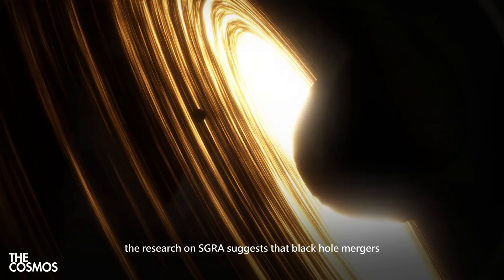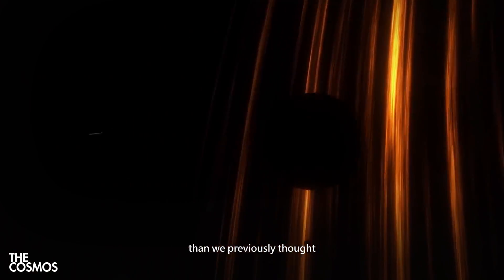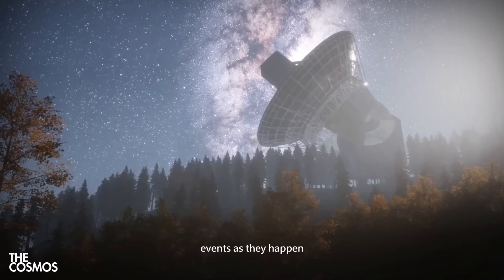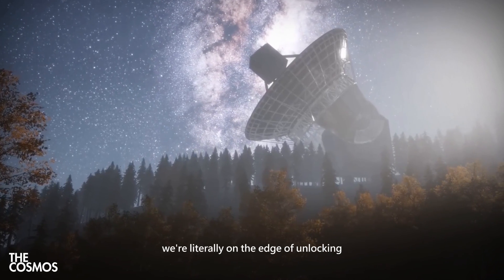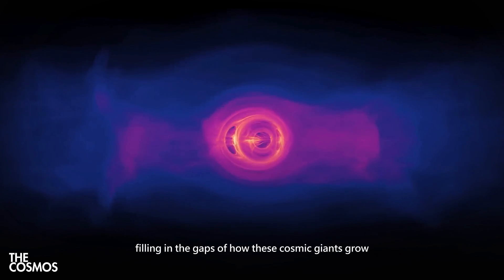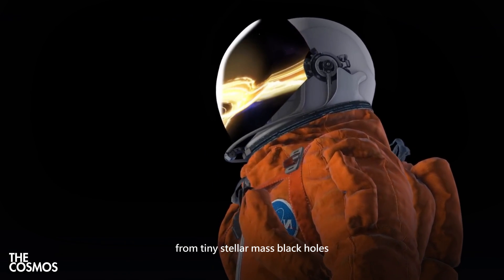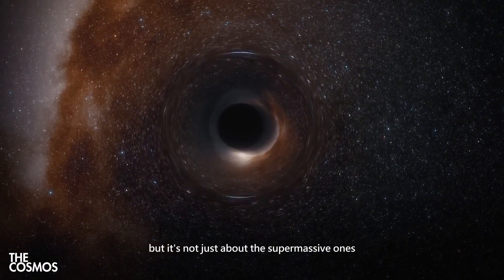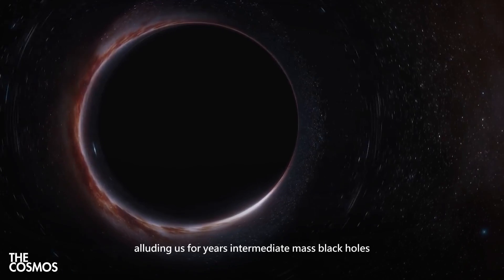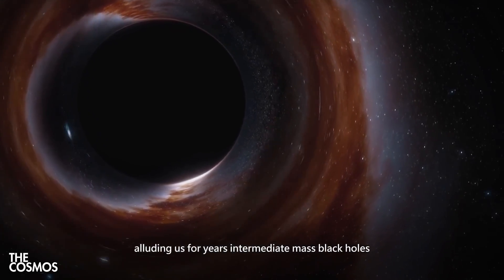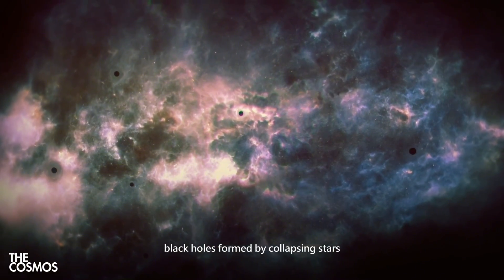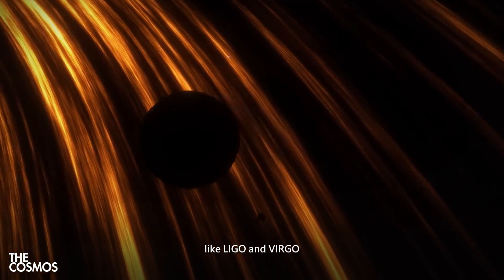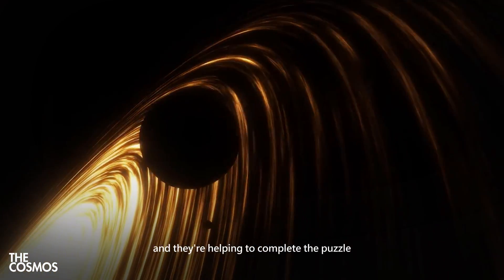The research on SGRA suggests that black hole mergers might be happening more often than we previously thought. So, in the near future, with these new tools, we're probably going to catch more of these cosmic events as they happen. We're literally on the edge of unlocking the secrets of black hole evolution in real time, filling in the gaps of how these cosmic giants grow from tiny stellar mass black holes into the supermassive ones that dominate galaxy centers. But it's not just about the supermassive ones. Scientists are also closing in on something that's been eluding us for years. Intermediate-mass black holes. These are the missing link between the smaller black holes formed by collapsing stars and the supermassive ones like SGRA. Recent discoveries made by observatories like LIGO and VIRGO have started to reveal these in-betweeners, and they're helping to complete the puzzle.